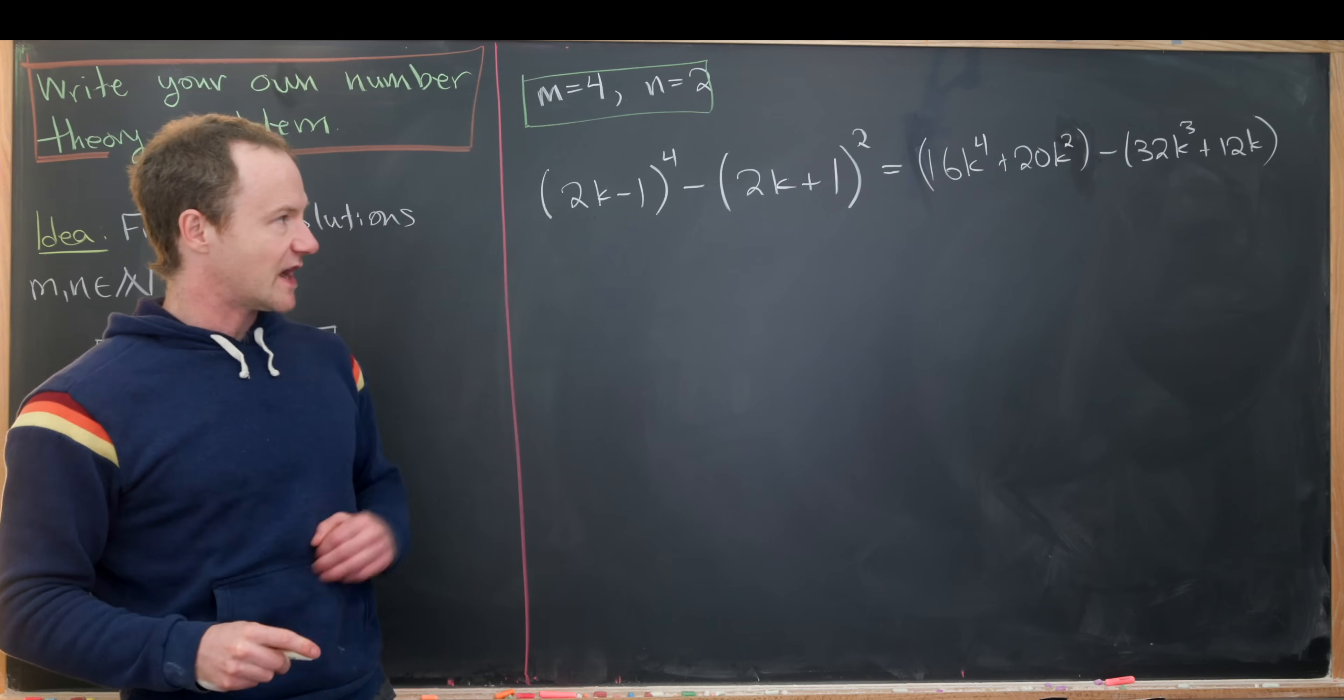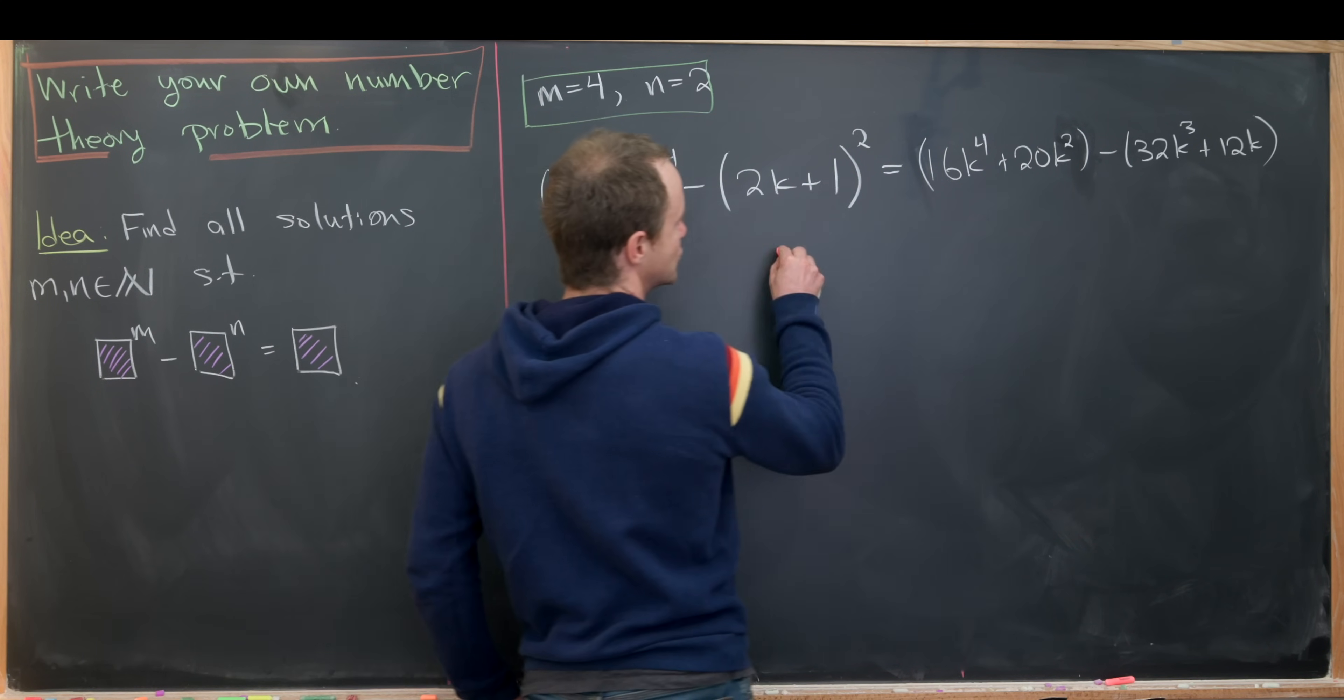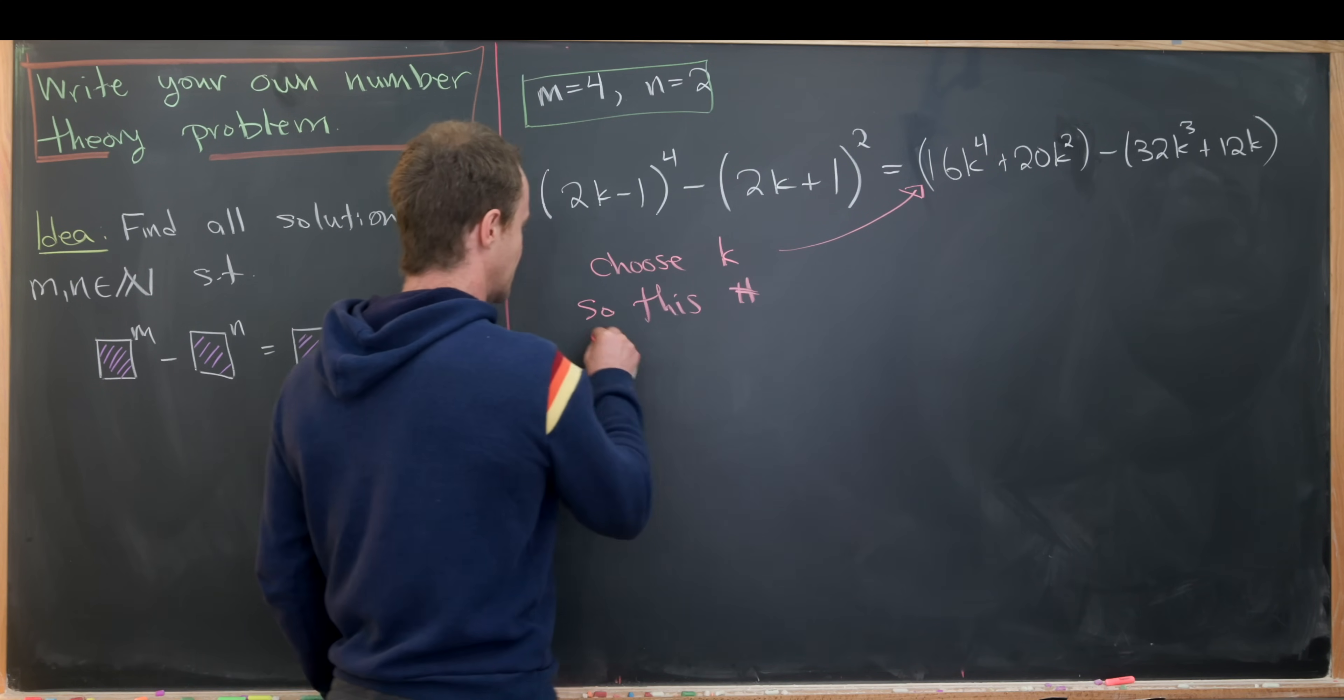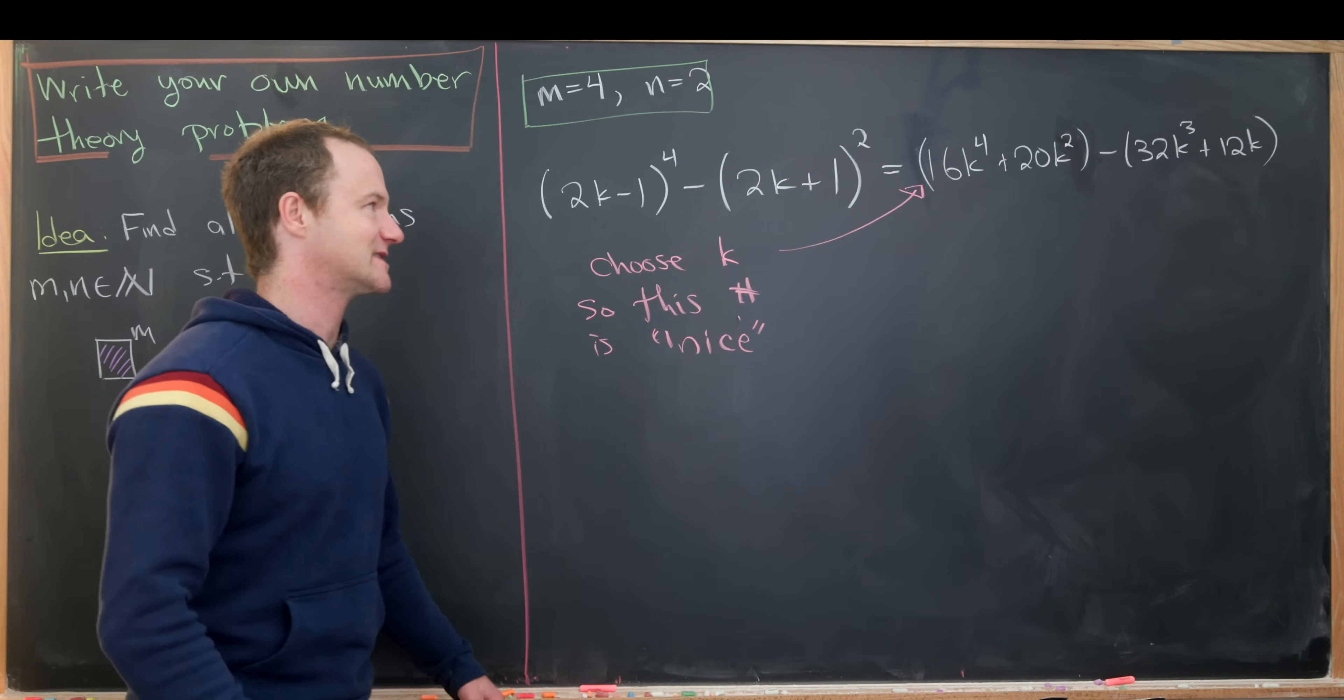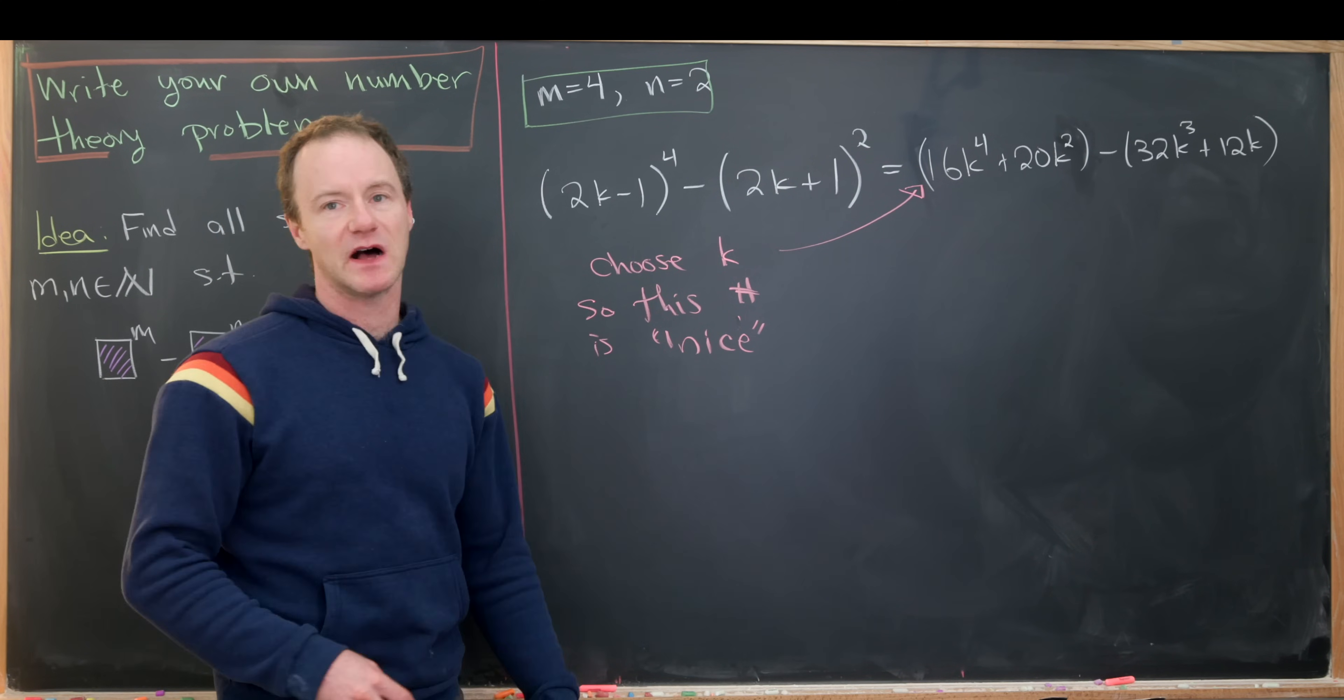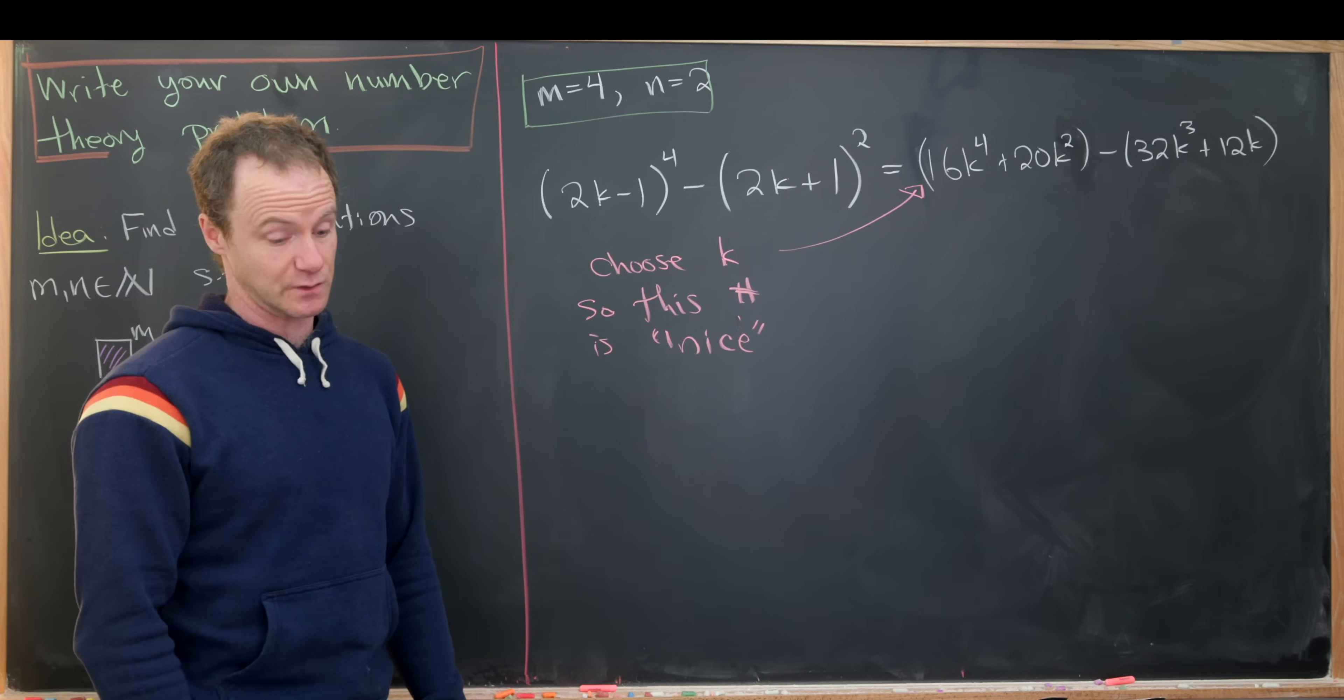Remember, we're trying to build an equation, so our next goal should be to choose a k so this number is nice. Furthermore, since I'm doing the fourth power minus the second power, it's going to be easier for this thing to be positive, although if it's equal to something negative, that's also okay.